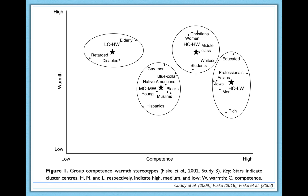Then we have the low competence, high warmth group — LCHW — sitting far to the left on the x-axis. This includes elderly people and disabled people. Competence here is a general term that could refer to physical or mental incompetence, again at least in terms of people's stereotypes. This group scores very high on the warmth dimension. Finally, the LCLW group — poor people, homeless people, welfare recipients — very low in both competence and warmth ratings.